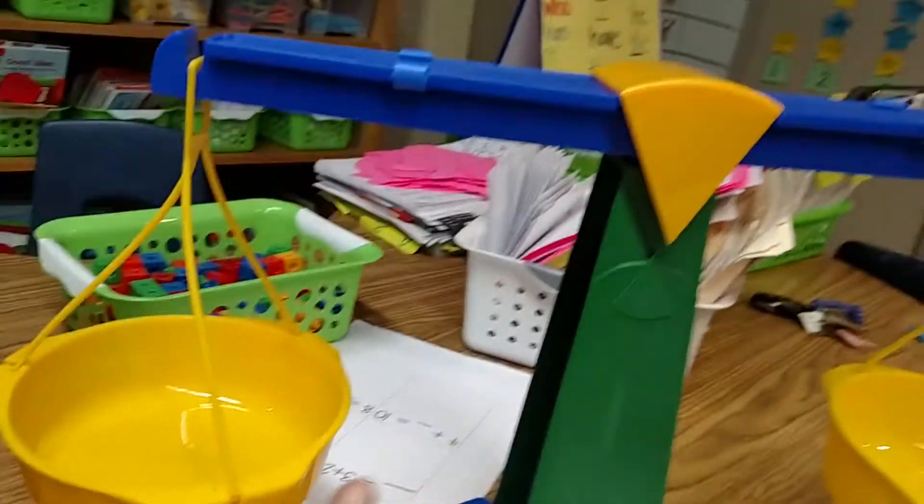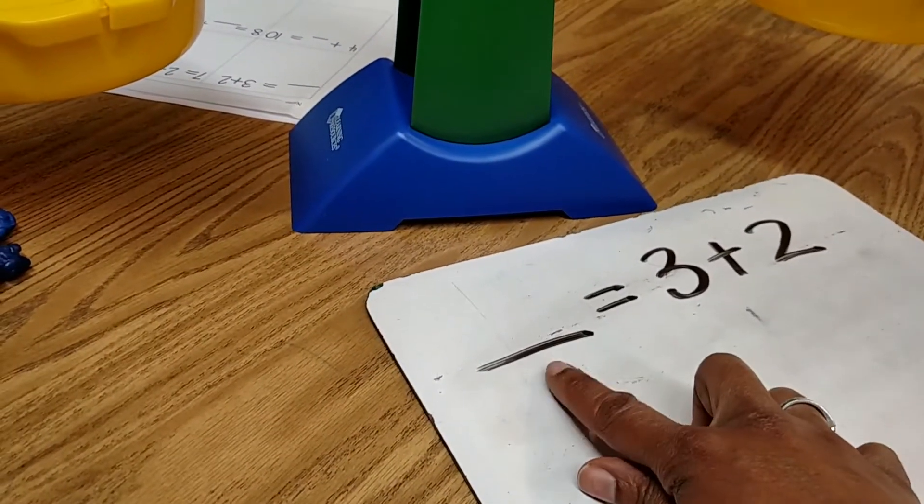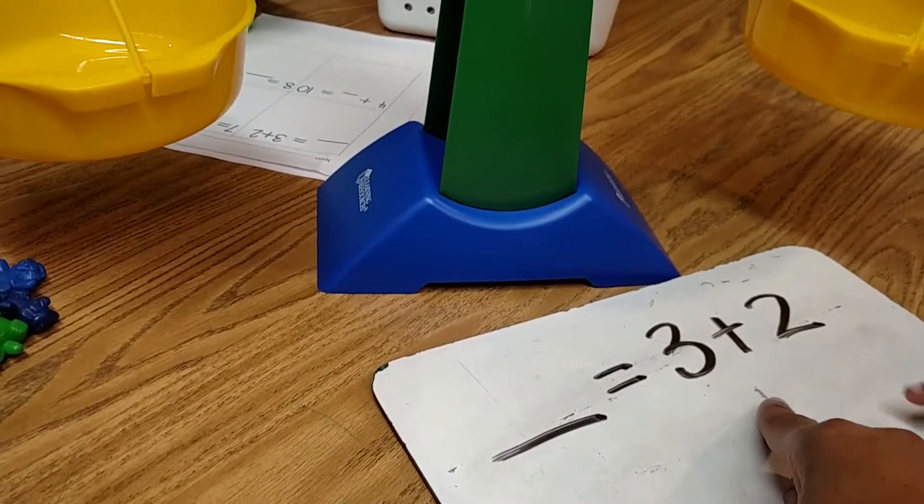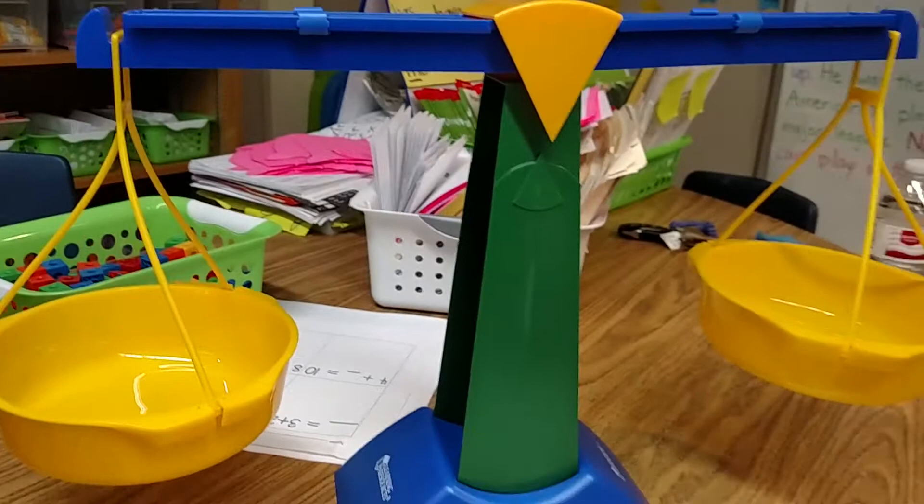That's like the balance scale we have right here. So this tells us that this side should balance with this side. And we can use the balance scales to figure that out.